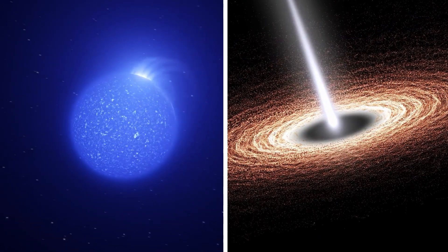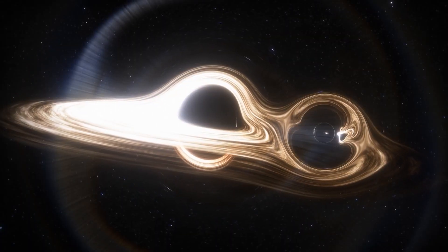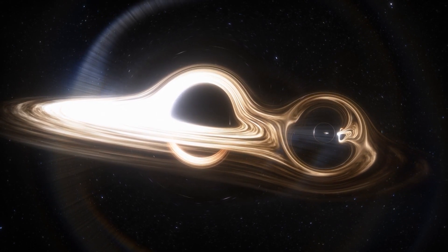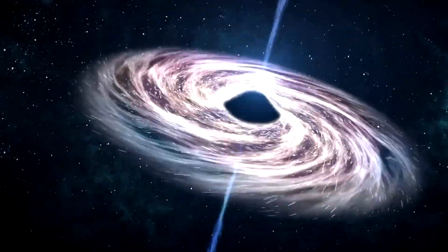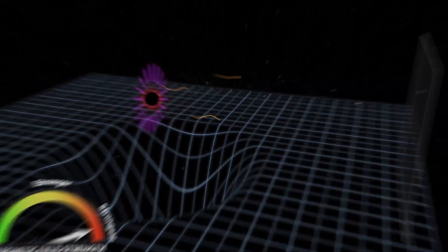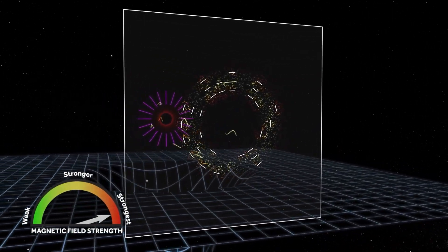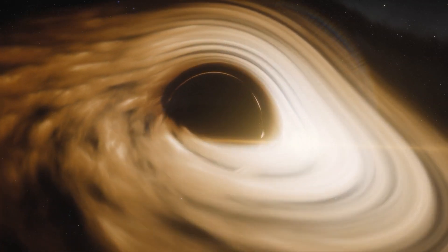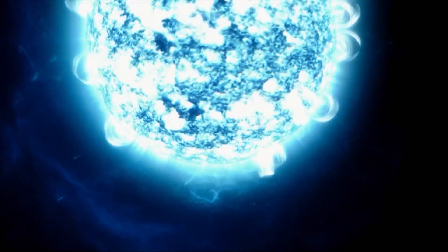While black holes and magnetars both hold immense gravitational and magnetic forces, comparing them involves considering specific aspects. In terms of gravitational force, black holes are generally more powerful due to their significant mass, even the smallest black holes surpassing the largest neutron stars.